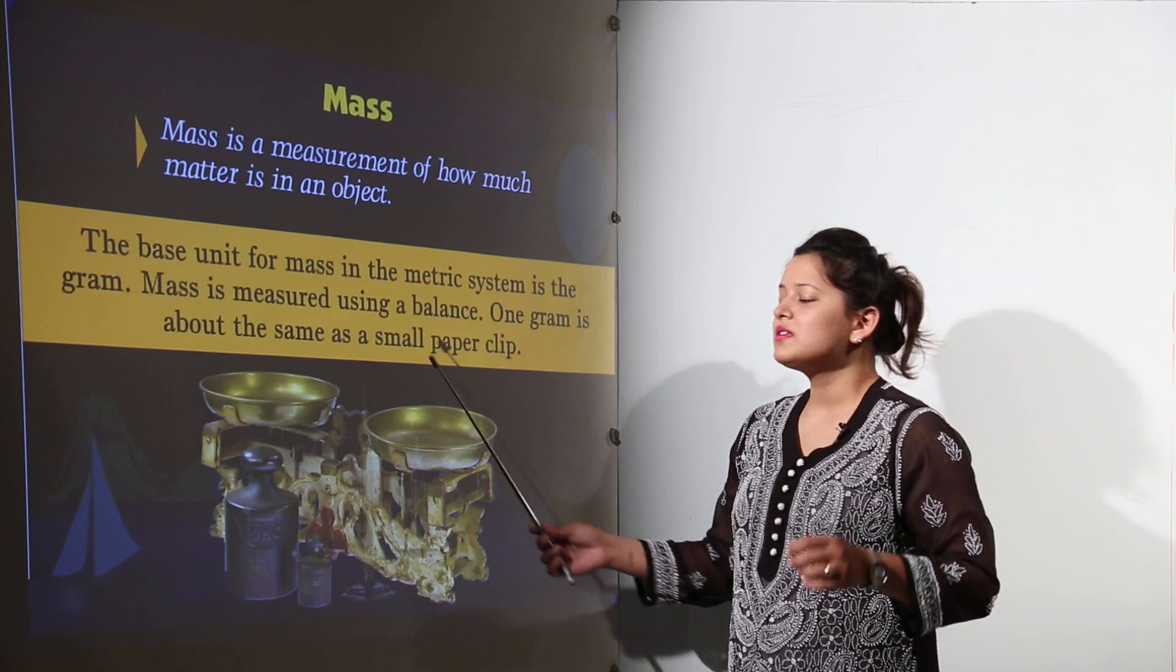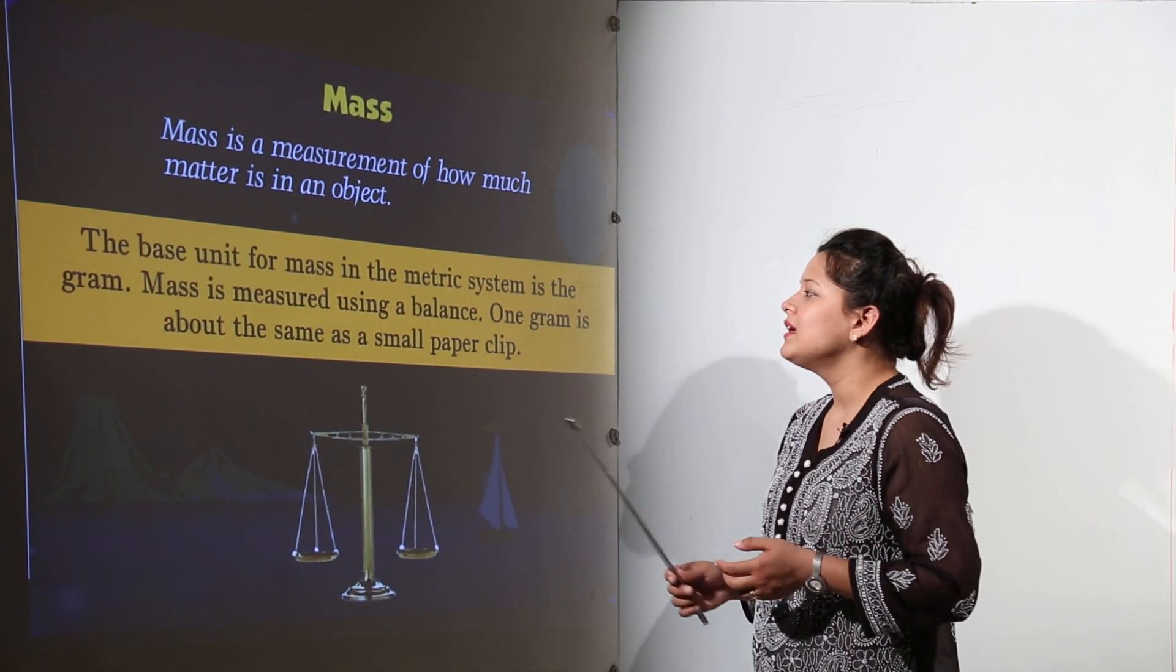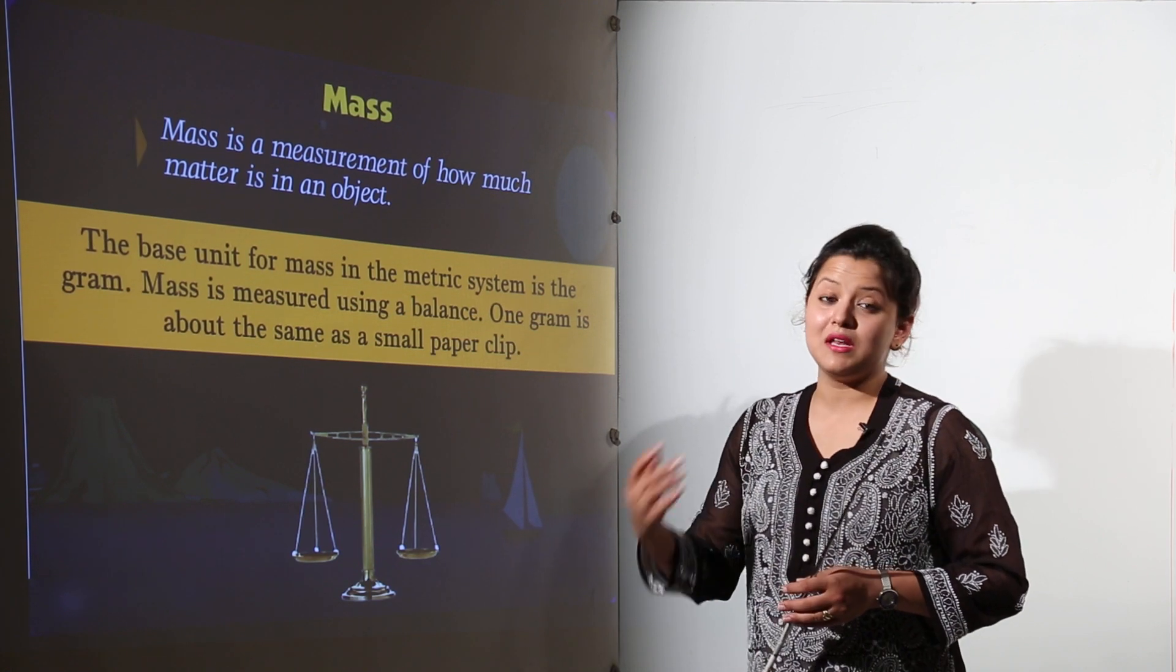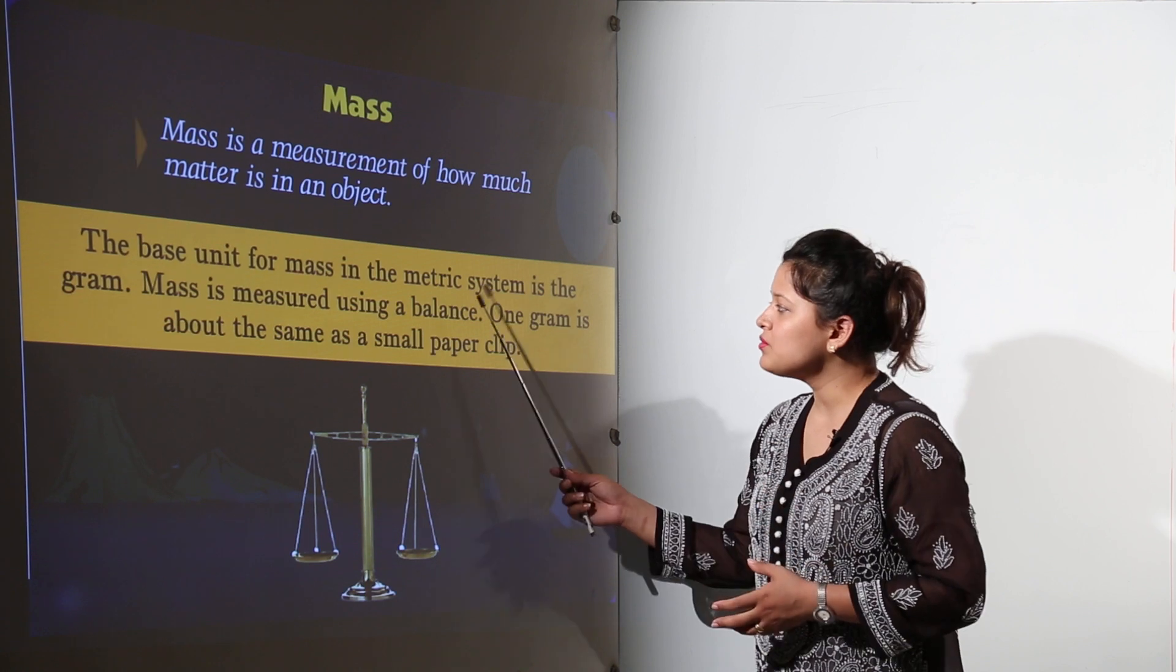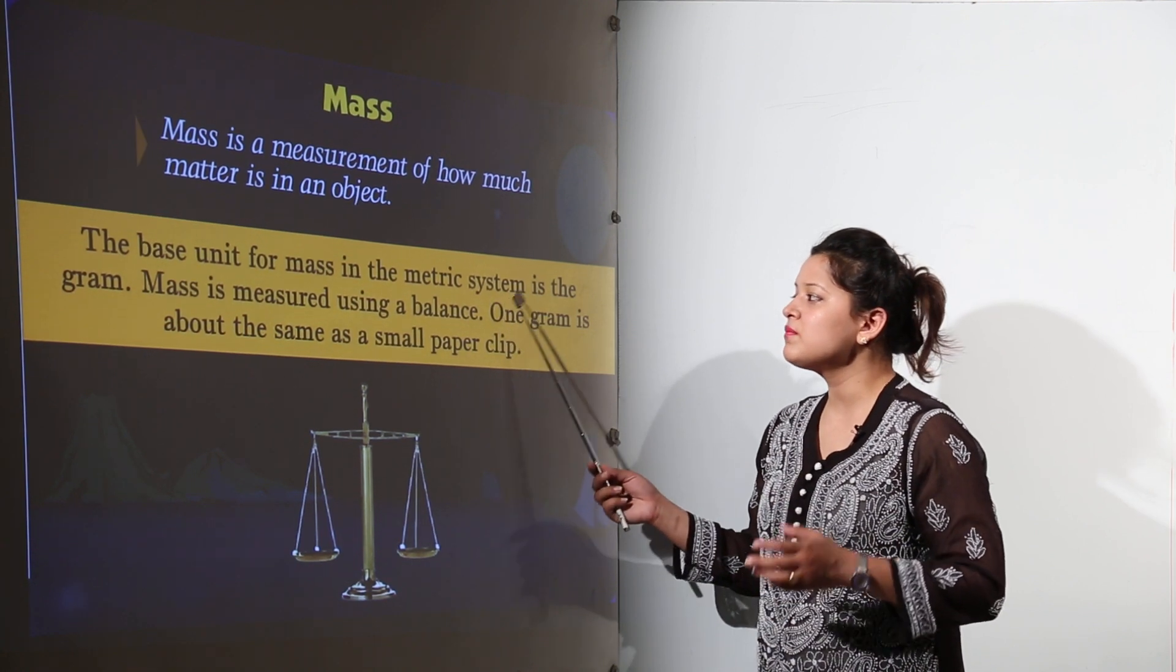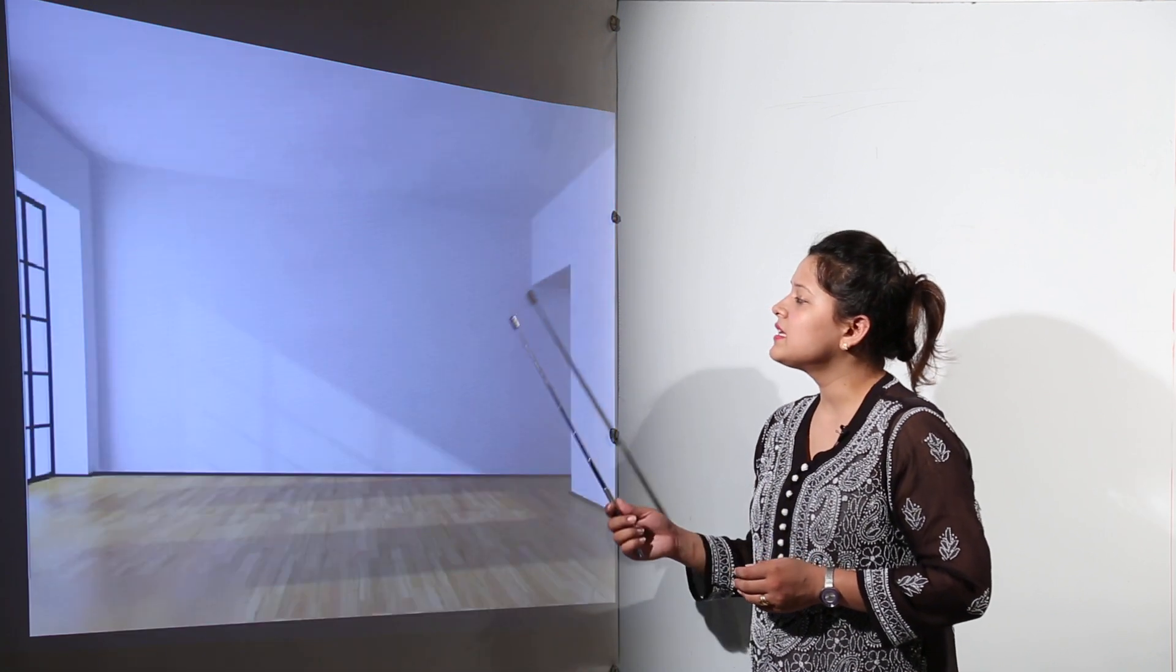So 1 gram would be equal to the same as a small paper clip's mass. So ideally see, mass can be measured in many units. We get kilograms and so on. But the base unit according to metric system for measuring mass would be grams only.